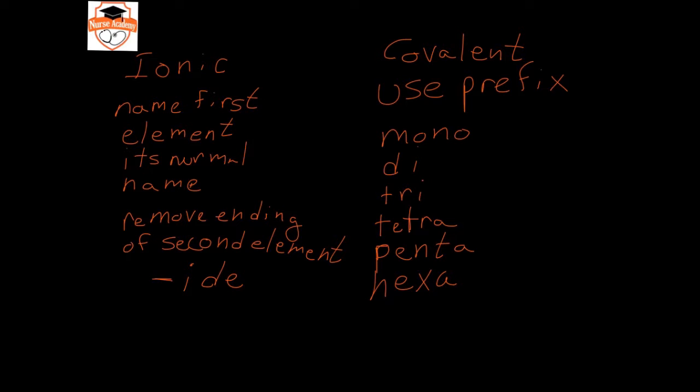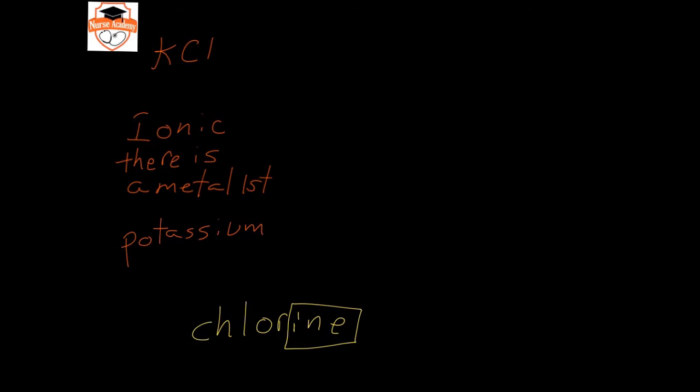So let's do some examples. If we have the element potassium chloride, we know that this is ionic because there is a metal first. Potassium is in the alkali metals group, so we know that it's a metal. We're going to name the first element its actual name potassium, and then take the second element, which is chlorine, and remove that ending and replace it with I-D-E. So that would be potassium chloride.